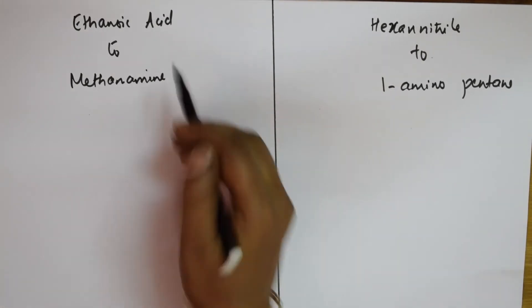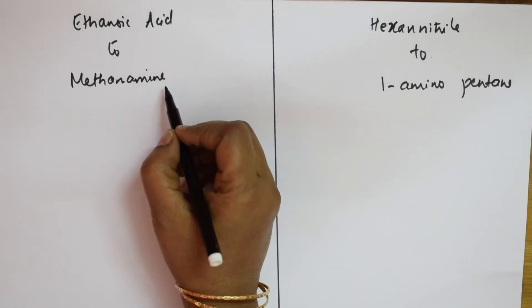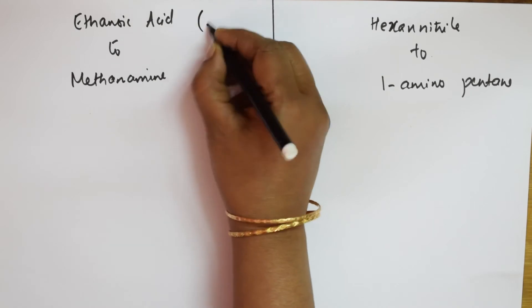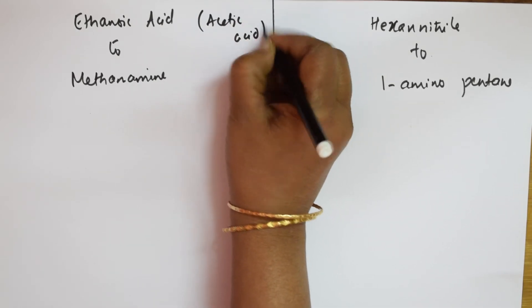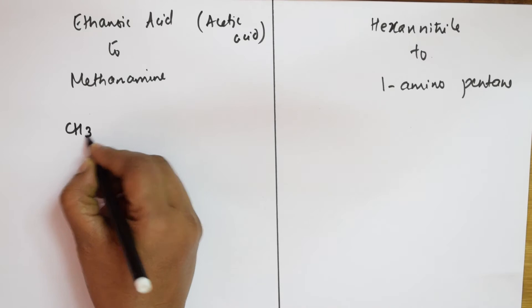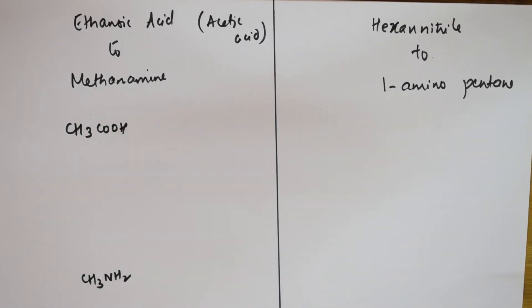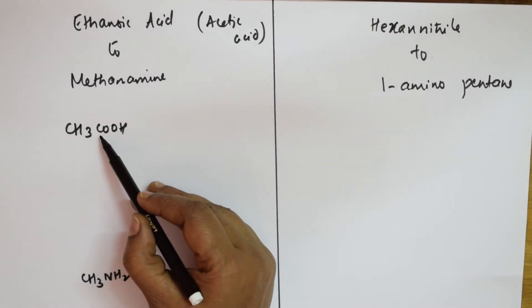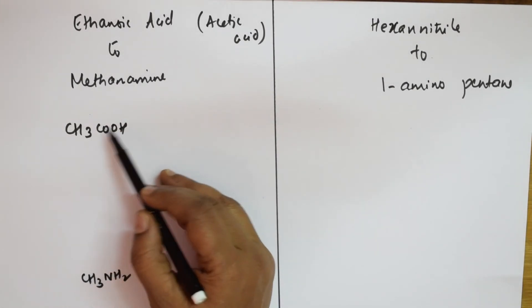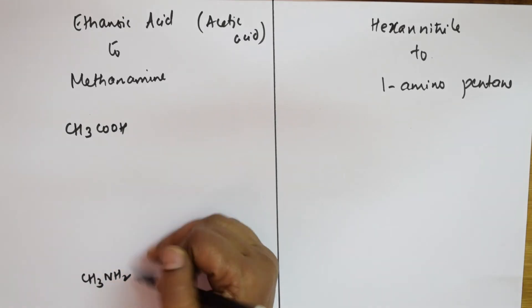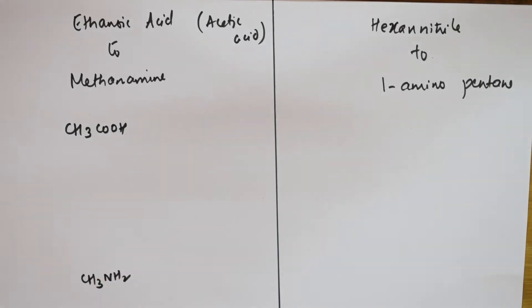What did he give me? Ethanoic acid to methamine. They're relating carboxylic acid chapter to amines chapter. Let us see. Ethanoic acid is nothing but acetic acid, so let us write the formula: acetic acid is CH3COOH. What should I convert into? Methamine means CH3NH2. Now see what's different here. There is one carbon, but now there is an acidic group here. Second important thing, that carbon also is lost, isn't it?